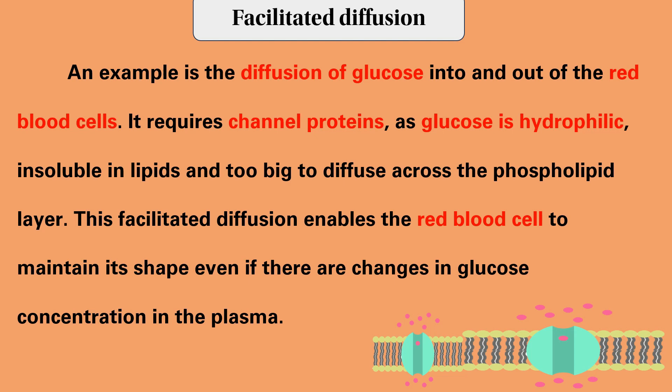In addition, glucose concentration affects diffusion. This diffusion enables the red blood cell to maintain its shape even if there are changes in glucose concentration in the plasma. The cell can also regulate water absorption through osmosis.